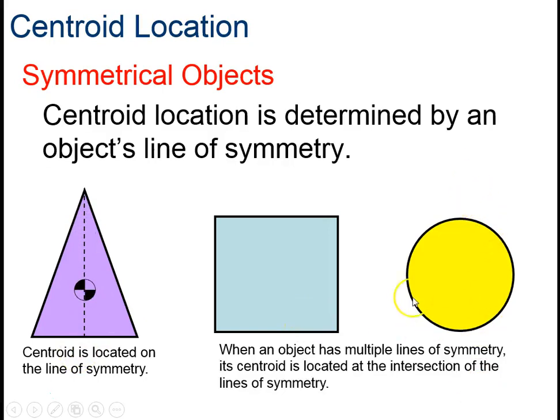When we have multiple lines of symmetry, we could fold it to find the exact center. For instance, in this square and this circle. Here we could fold it along the diagonals to find the center, and the circle we could fold it in any two directions to find the center.